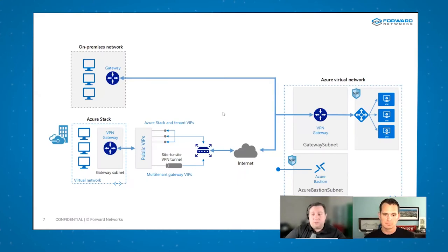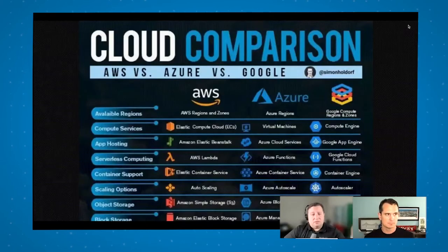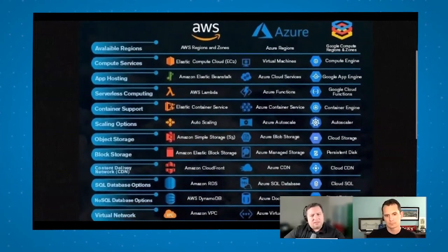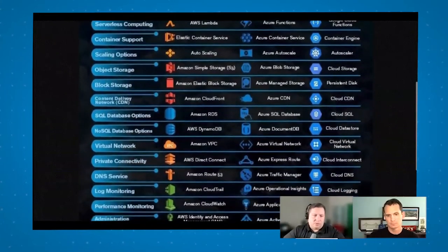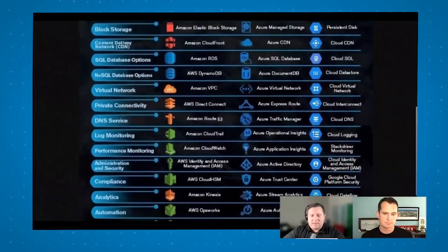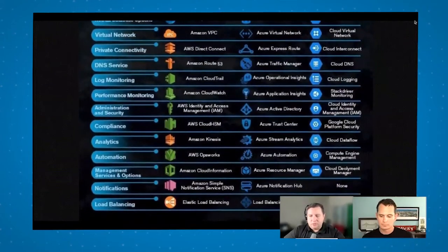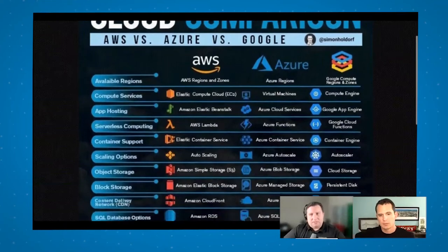It doesn't get any easier when we start talking about Azure — it's a little more on-prem-like in the way they do routing, but still its own spin. If you look at all the different services across clouds — storage options, networking options, DNS connectivity, compliance, analytics — they're all very different from each other. This is a monumental task: basic troubleshooting plus figuring out your security between them. Let me jump right into the product to show how we rationalize all these environments plus your on-prem.